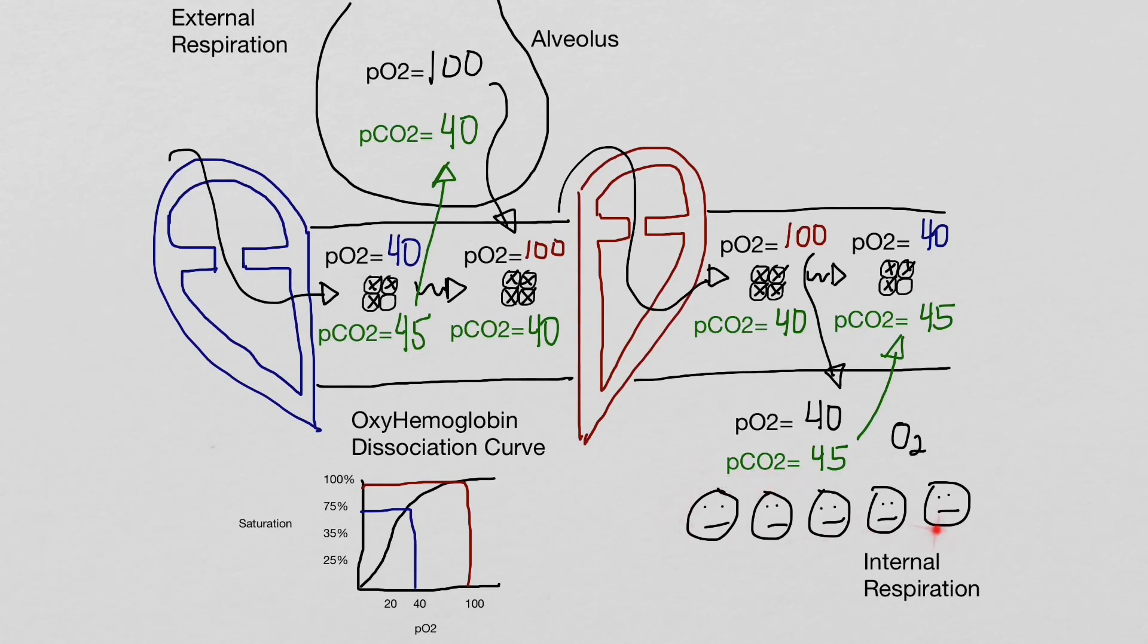However, if these cells start to do more work, some variables are going to change. With an increase in metabolism, the cells will utilize more oxygen, which reduces the partial pressure of oxygen to 20 in the interstitial fluid. When the partial pressure of oxygen is 20, that means it's 35% full, which means we have delivered more oxygen to the working cells.